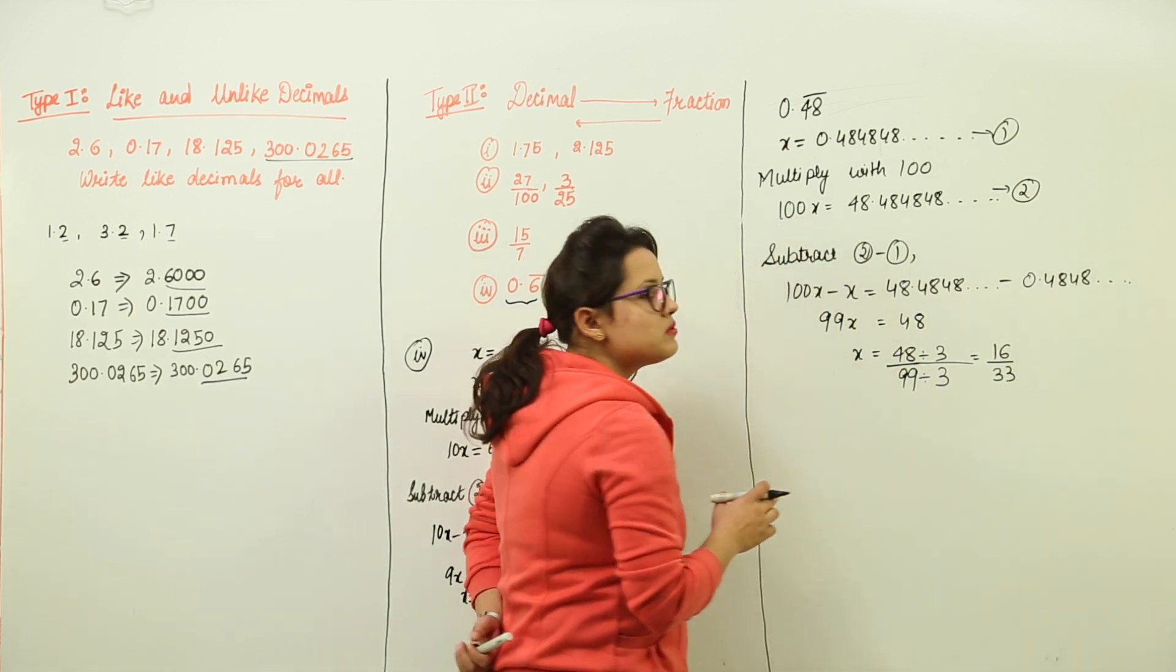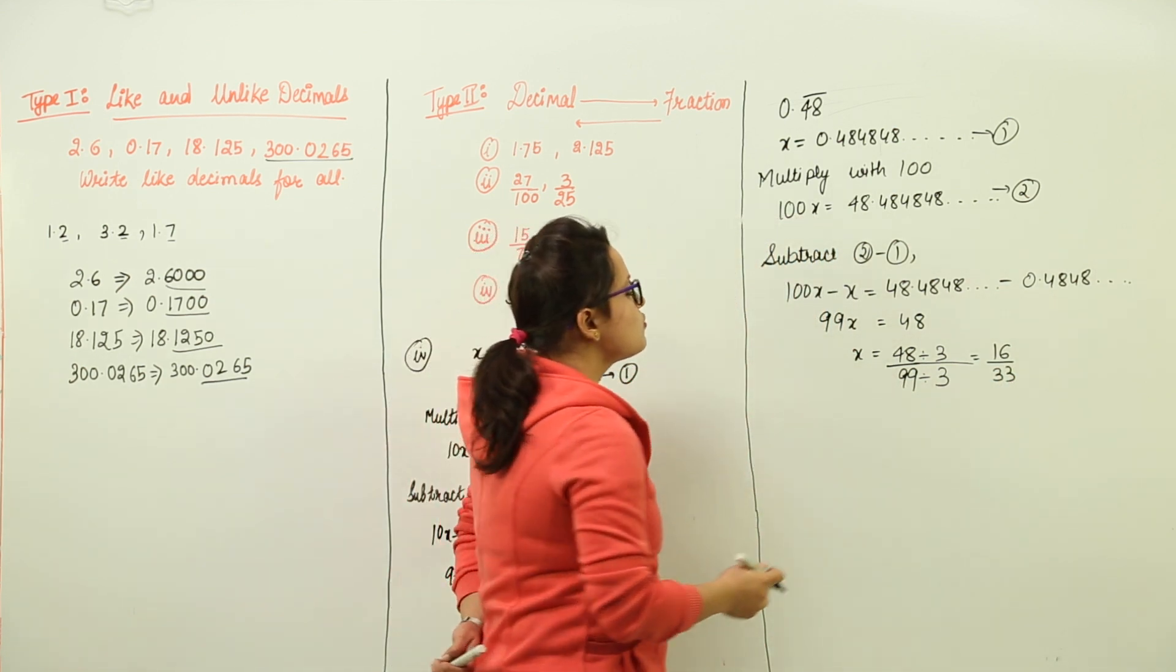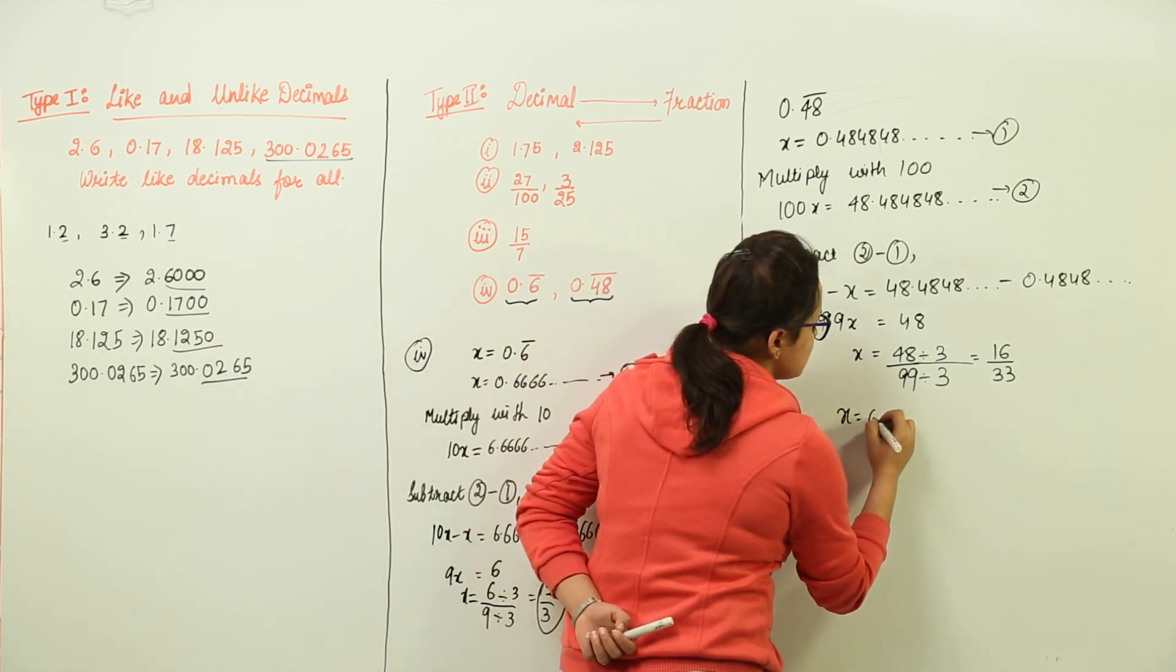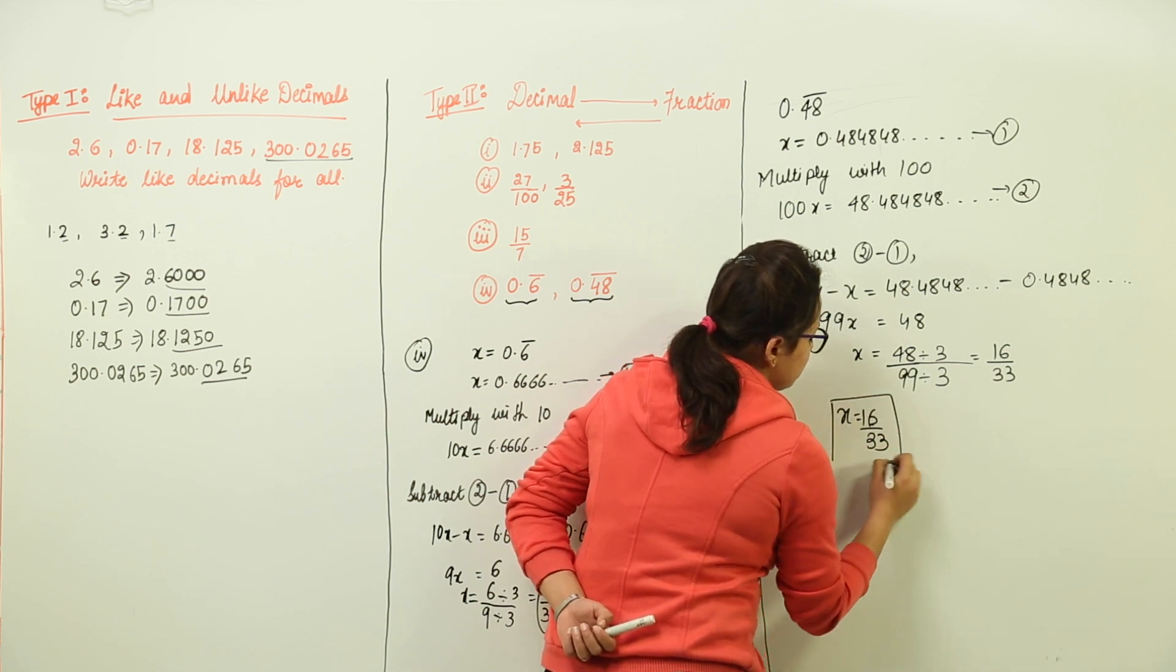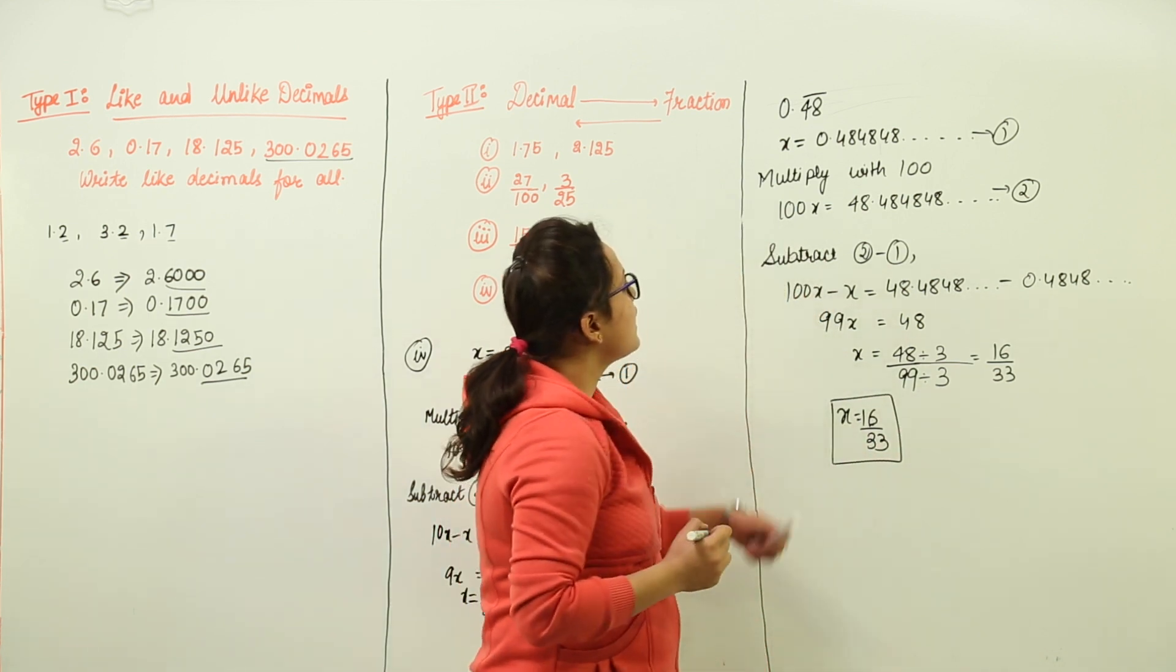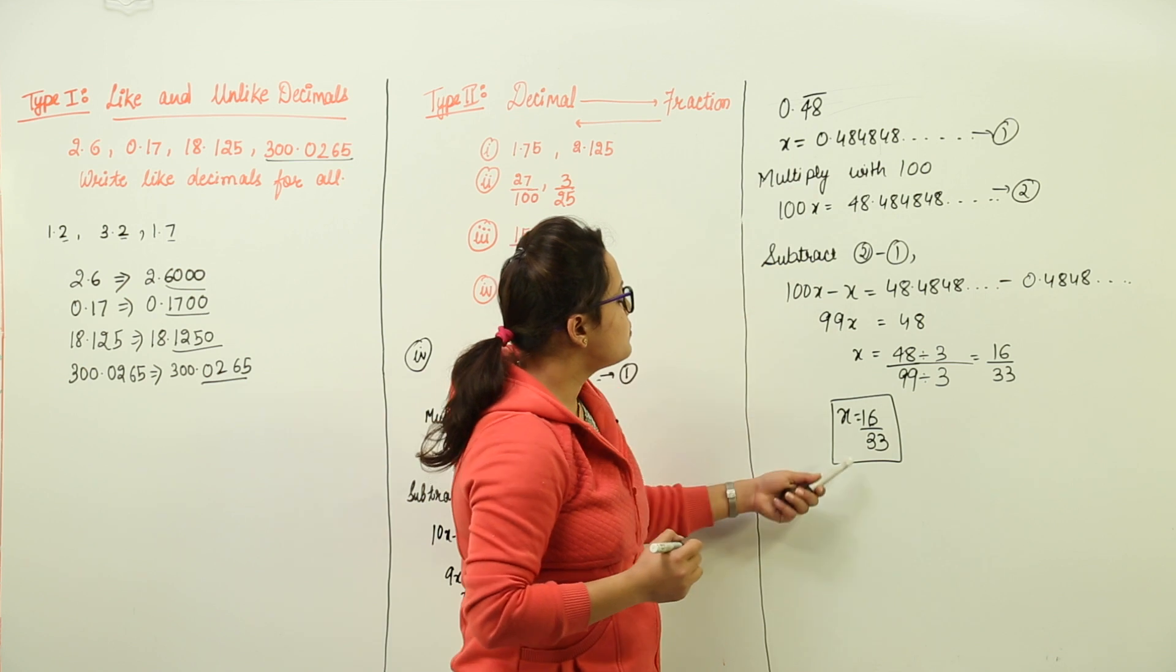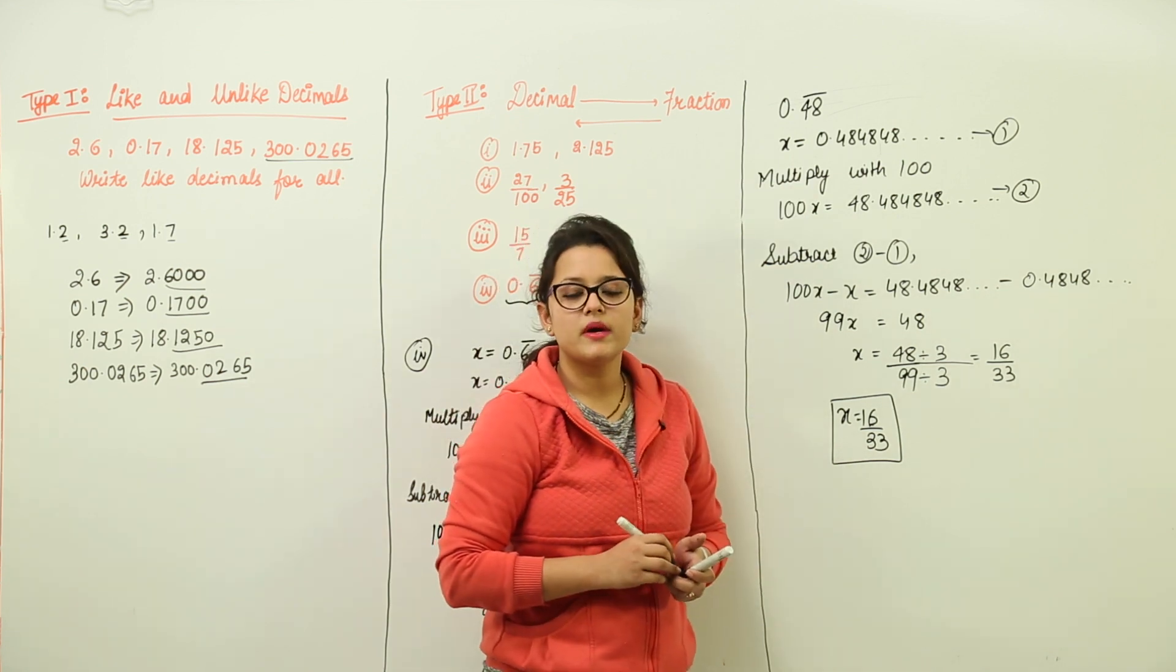Now this is the maximum possible or you can say the lowest form. So we leave the answer as it is. That is x is equal to 16 upon 33. That means the decimal we had 0.48 represented in the form of 16 by 33.